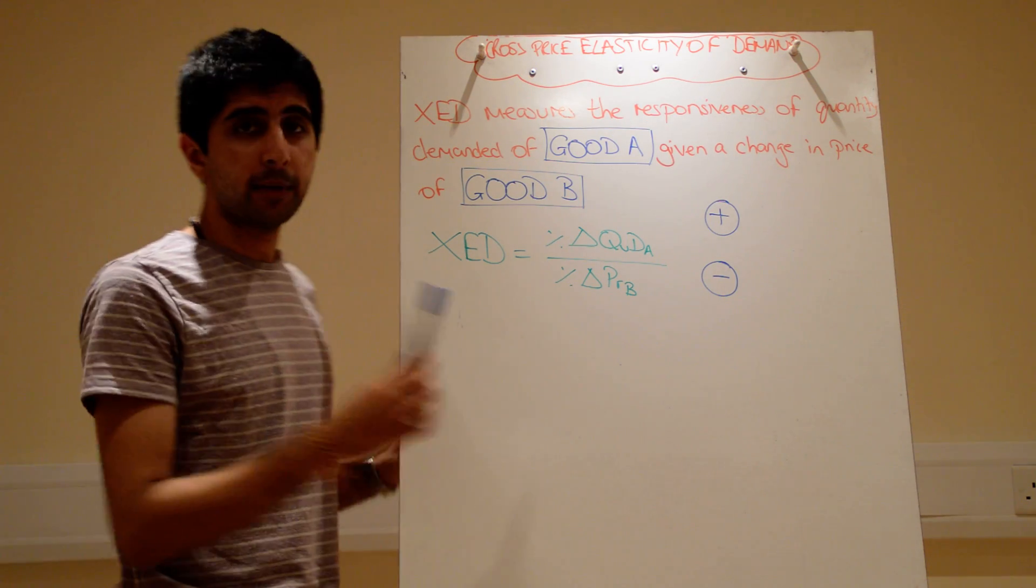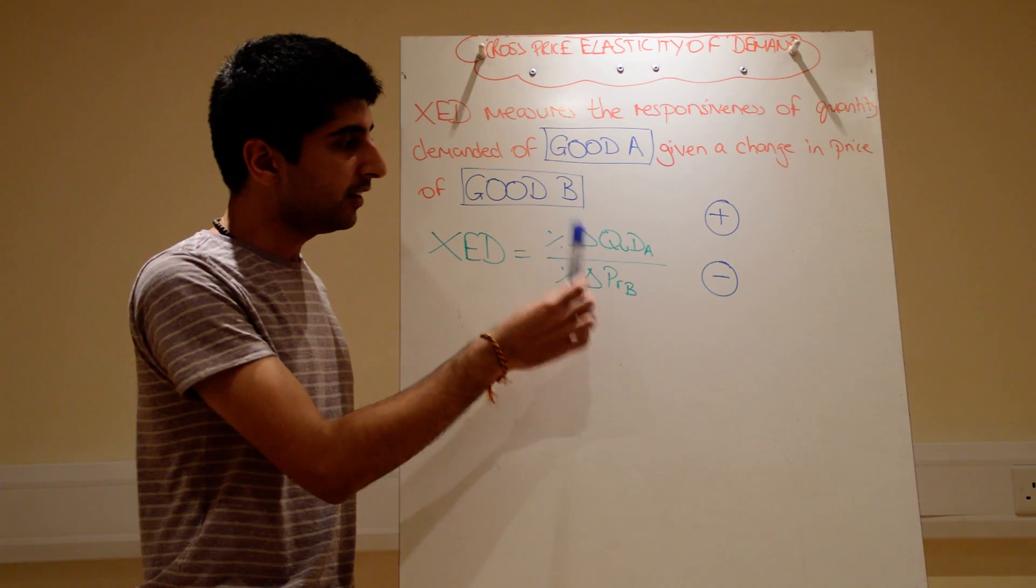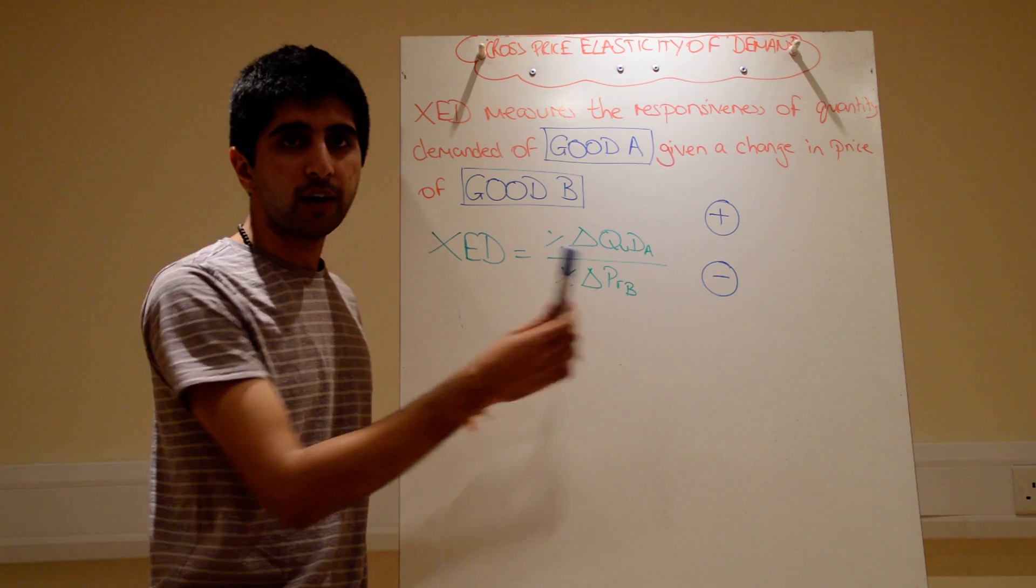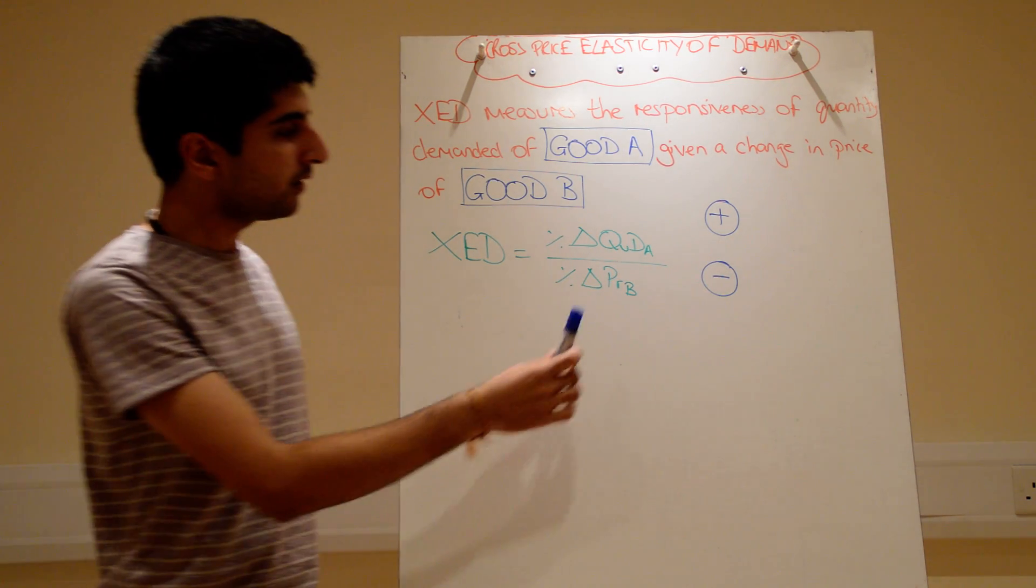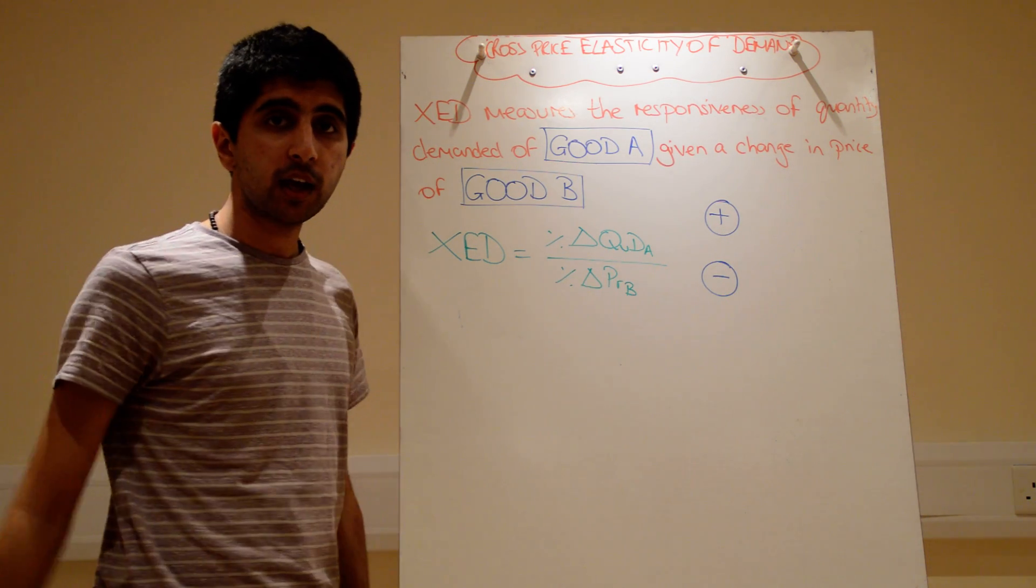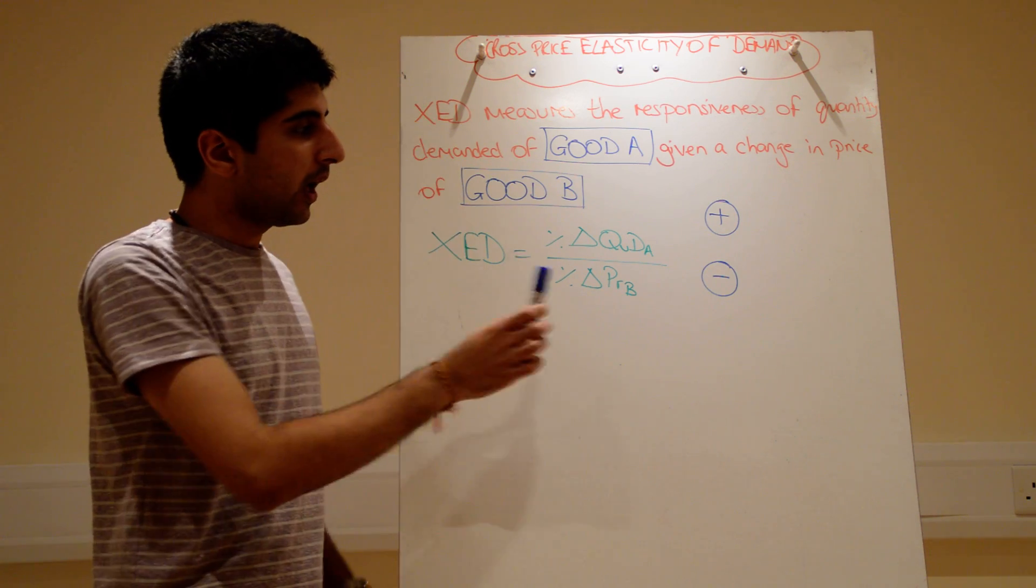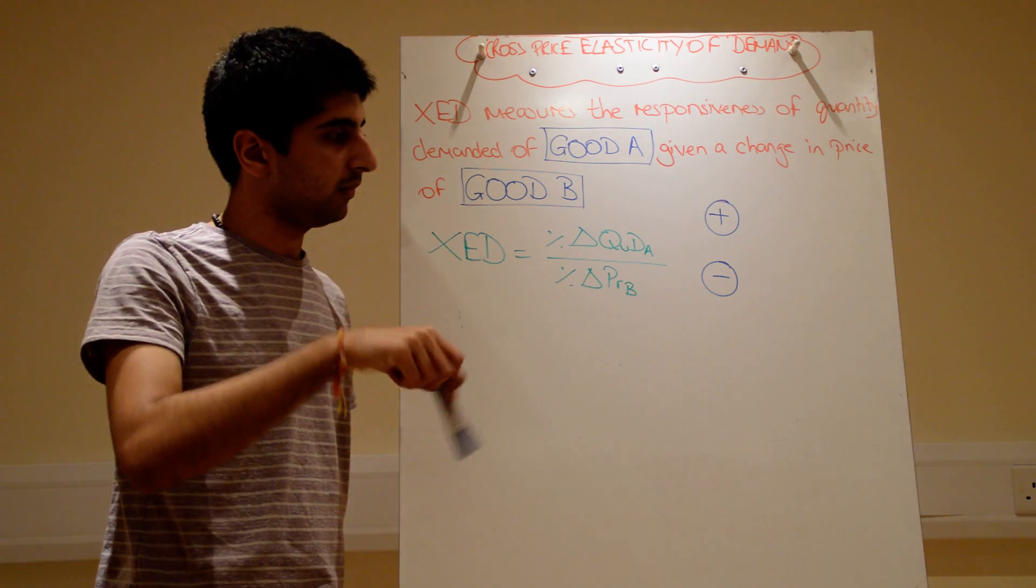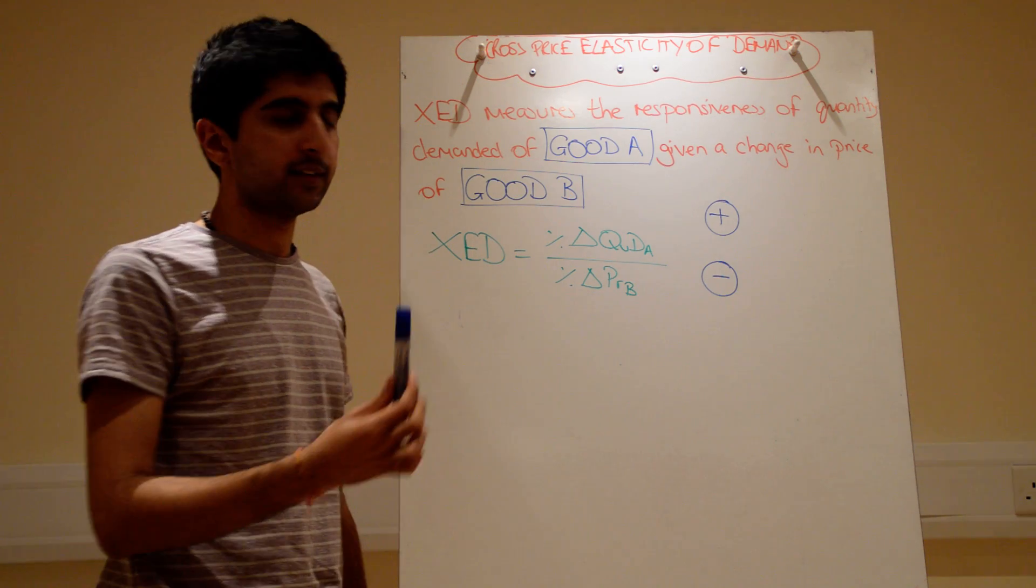And when we look at the equation, it makes logical sense. XED - we're looking at the percentage change in quantity demanded of one good, called good A, given a change in price of another good, called good B. So the price of gin goes up - by how much does the quantity demanded of tonic go down? Complement goods, we expect that relationship. How much? That's what XED tries to tell us.